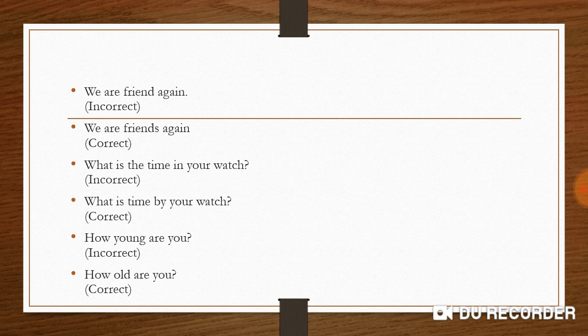Next: 'How young are you?' This is wrong. We do not say 'how young are you.' To ask someone's age, the correct expression is: 'How old are you?'